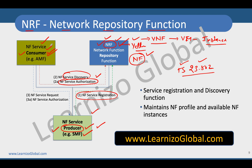As a next step, the consumer reaches out to the producers directly with a service request message, and the producers respond to that particular service. So every time a consumer wants to consume a service, it has to contact the NRF first.